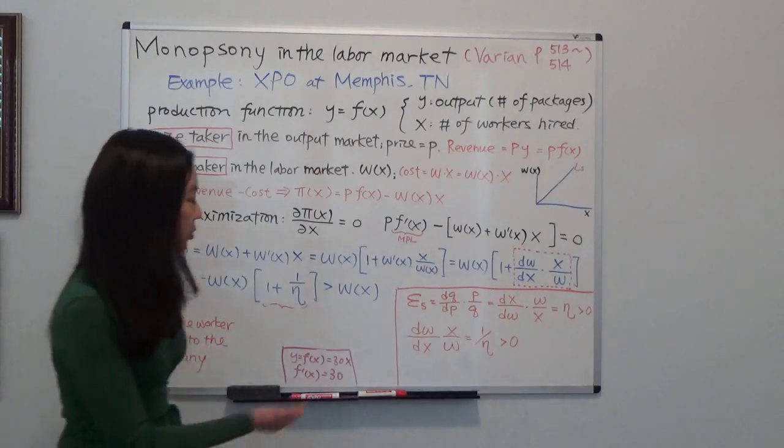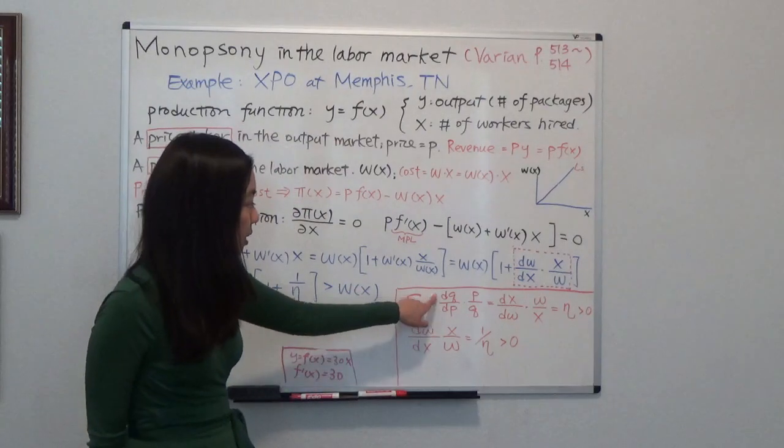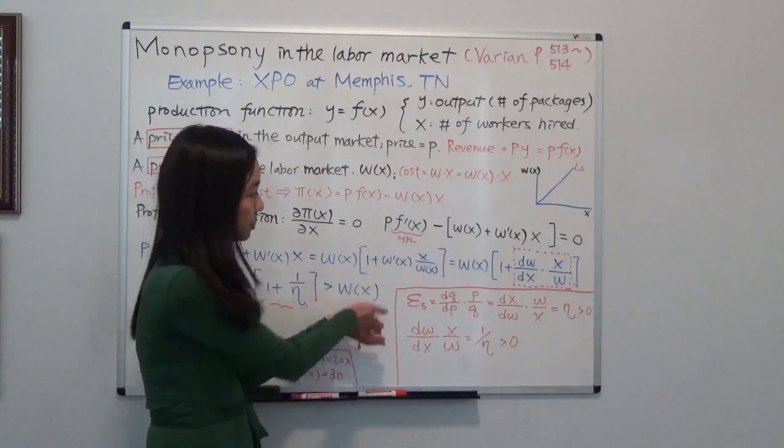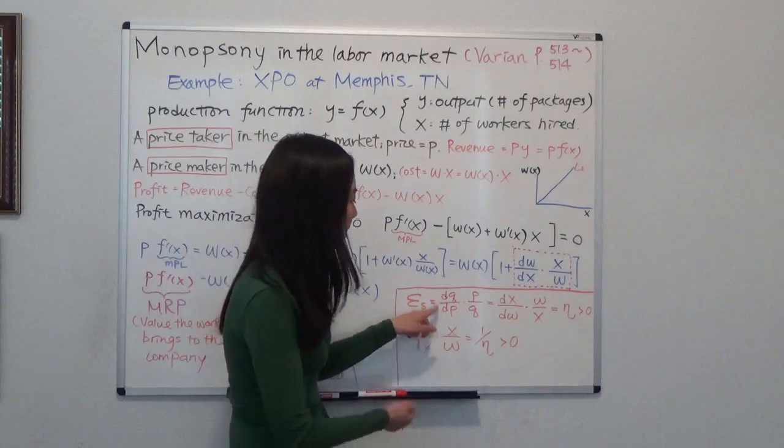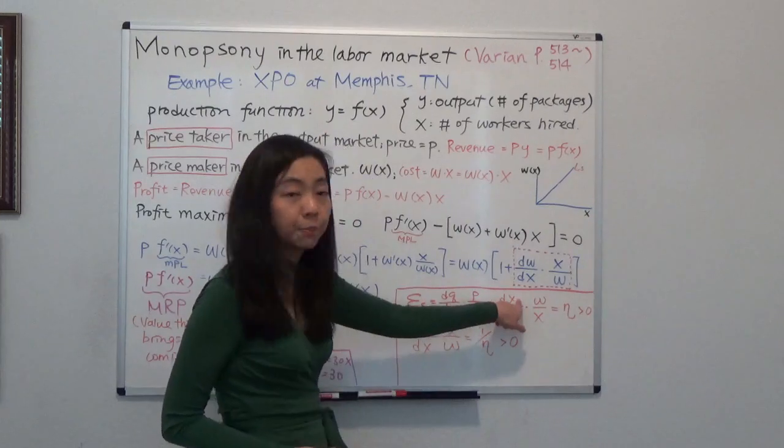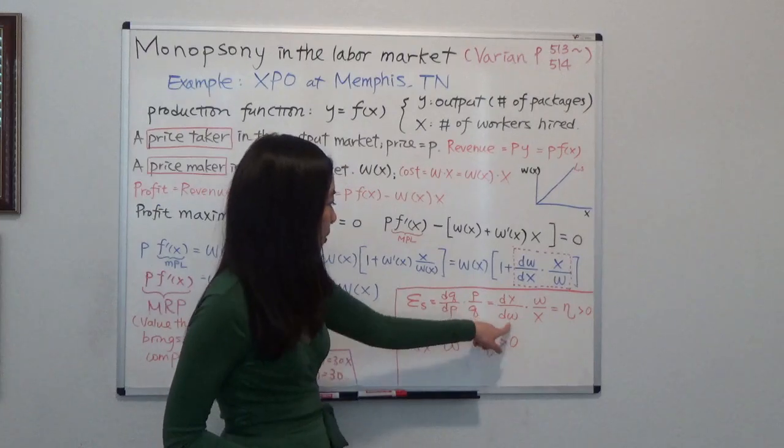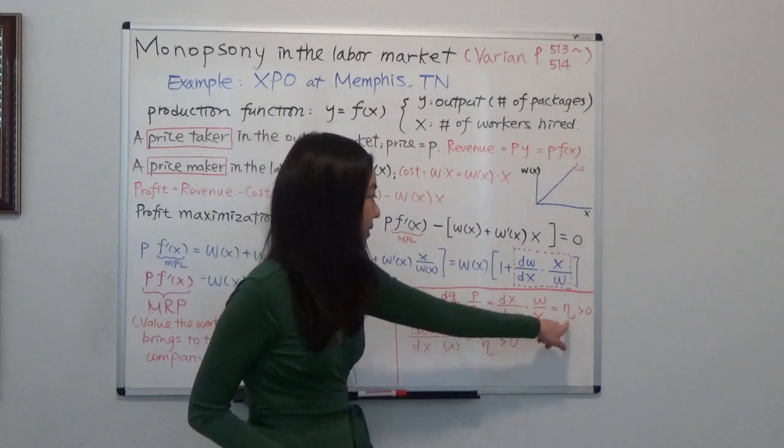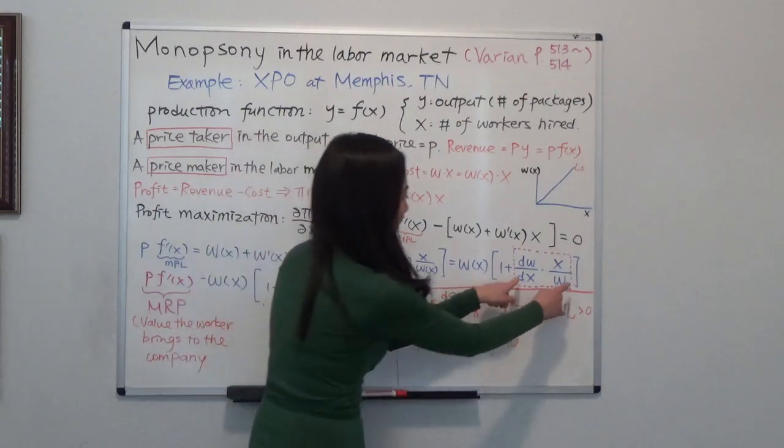Now, going back to elasticity of labor supply, we know that elasticity is equal to dQ/dP times P over Q. And now we are going to change the notation to the notation we get from Varian's textbook. So dQ/dP is just dX/dW. So X is the number of workers, so the quantity of workers. And the price you pay for the worker really is just their wage. And you can see that's elasticity. And you take the reciprocal of that. That's exactly this term.